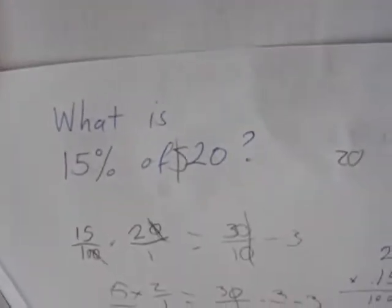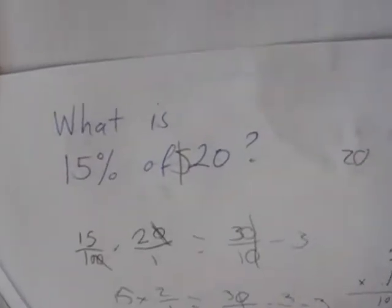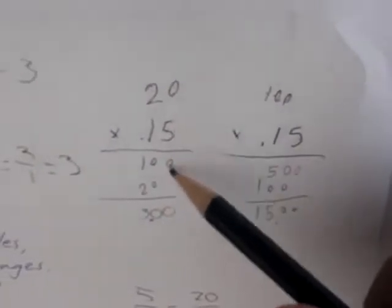So 15% of 20 is 3. Or you could do it the normal way by multiplying it as a decimal.